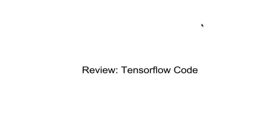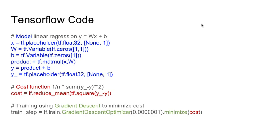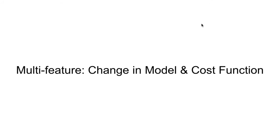Let's look at TensorFlow code that we have done before. With a single feature, we first have to define a model, then we define the cost function which is in red, and finally we define the gradient descent where we try to minimize the cost, which is in green. So there are three parts to the TensorFlow code. When we want to do multi-feature regression, we have to make a change in the model and cost function.